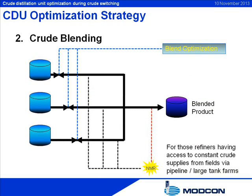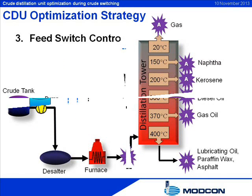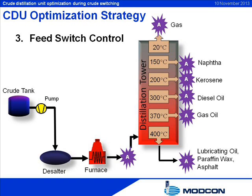Crude blending is one of the practices applied by refineries to increase the margin between the cost of the crude feed and the revenue from selling the final products. Differences in crude oil compositions from various locations impact the production capacity of the refinery to deliver the required distillates. To optimize process parameters and produce the required range of distillates at the highest yields, while taking into account the characteristics of the crude oil to be processed, strict and adequate monitoring of streams is crucial.